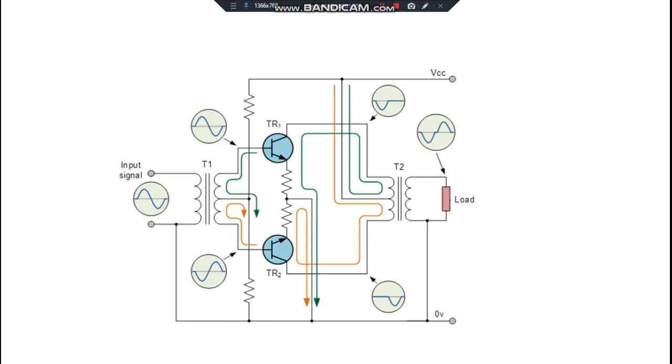This is the NPN transistor, this is the PNP transistor. What happens is the conduction happens during the positive half of the input, of whatever appears at the base of the NPN transistor. The conduction occurs and the signal across the output terminal is always, as you know, 180 degrees out of phase.